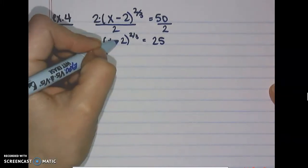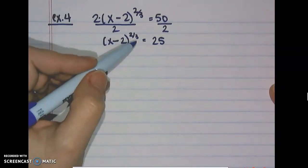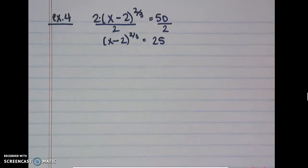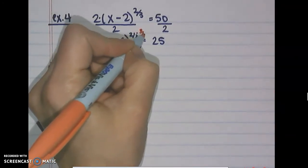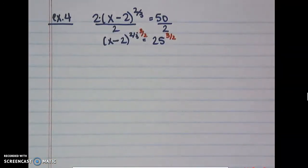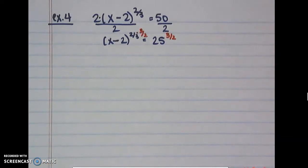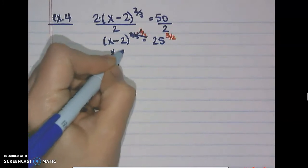To get rid of the rational exponent of 2/3, we take both sides to the reciprocal power. The way to get rid of the cube root is to cube both sides; the way to get rid of squaring is to take the square root. So we raise both sides to the 3/2 power: 2/3 times 3/2 equals 1, leaving us with just x minus 2.